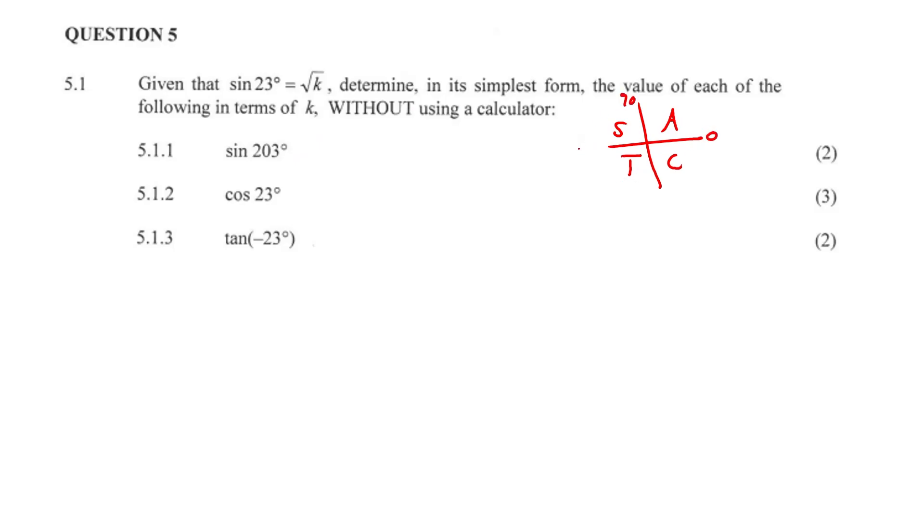So it goes 0, 90, 180, and 270, ending off at 360. Now, sine is negative in this quadrant, so that's just going to be negative sine 23, which equals negative root K. Nice, easy question to start things off.